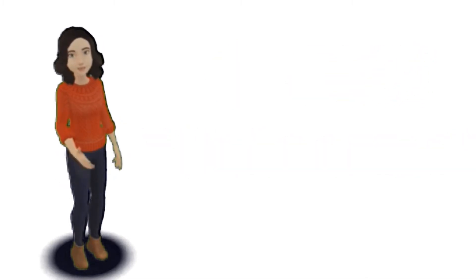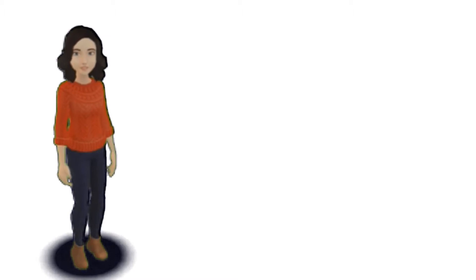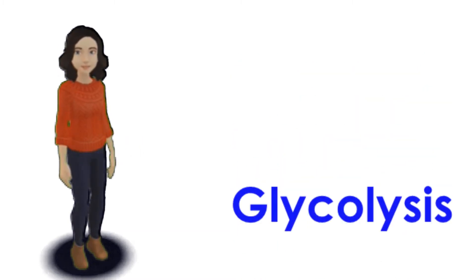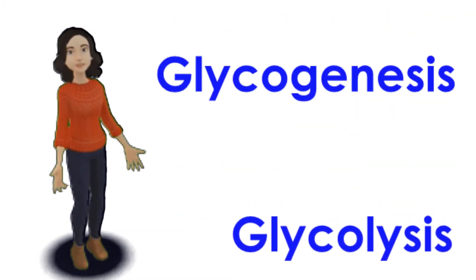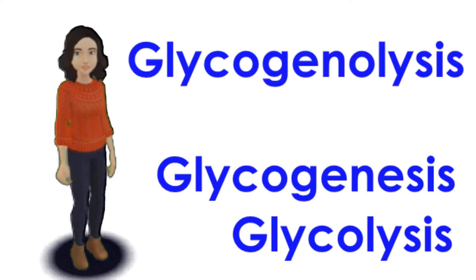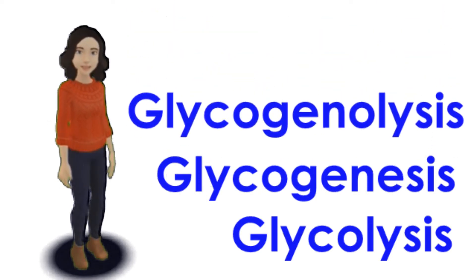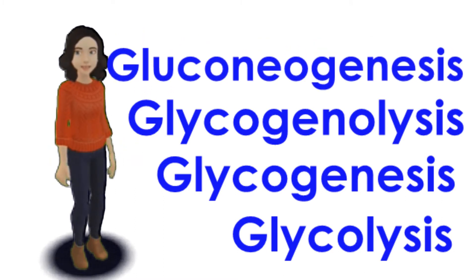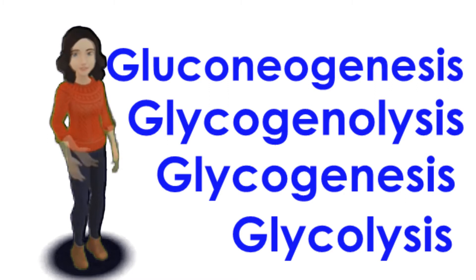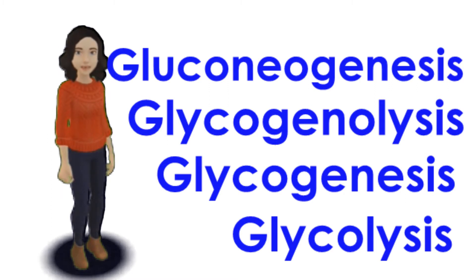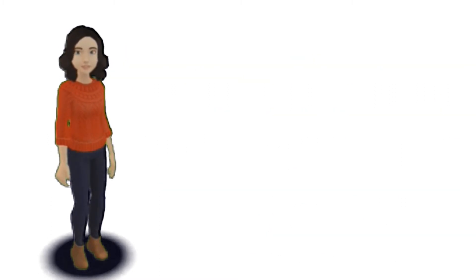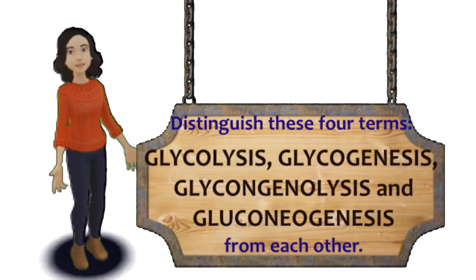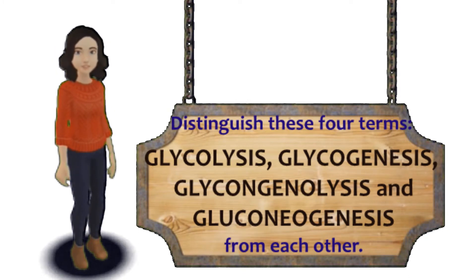Today in this video, we are going to tackle the terminology for glucose metabolic pathways. The words glycolysis, glycogenesis, glycogenolysis, and gluconeogenesis have like-sounding names. Keeping the terminology for these four processes straight is often a problem and can cause confusion. So our learning focus is to distinguish these four terms from each other.